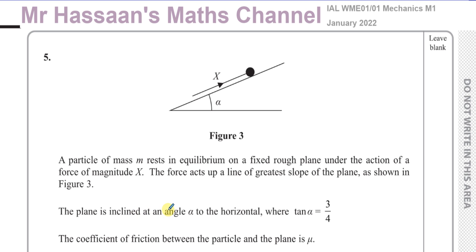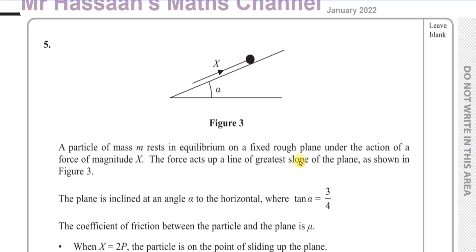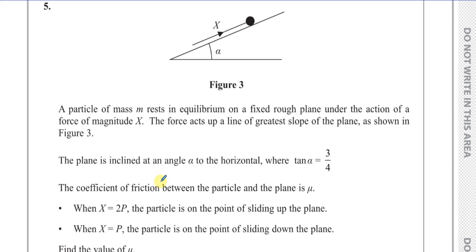The plane is inclined at an angle alpha to the horizontal, where tan(alpha) = 3/4. The coefficient of friction between the particle and the plane is mu. When X equals 2P, the particle is on the point of sliding up the plane. But when X equals P, the particle is on the point of sliding down the plane.